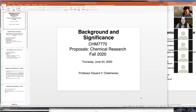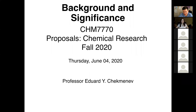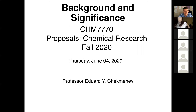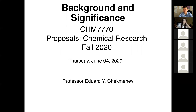Today we will be doing three different sections during our formal lecture. We will discuss the background and significance part of your research strategy. We will briefly discuss the use of referencing software called EndNote and do some demo with this software. We'll conclude our in-class activity with the exercise for drafting the background and significance section for our example proposal.